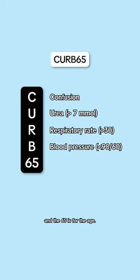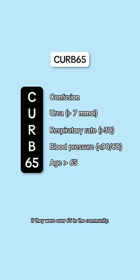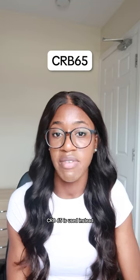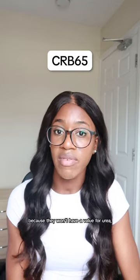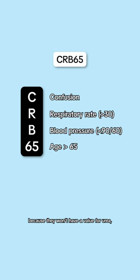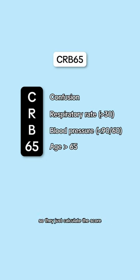The 65 is for age. They would get a point if they're over 65. In the community, CRB65 is used instead, because they won't have a value for urea. So they just calculate the score based on the other four components.